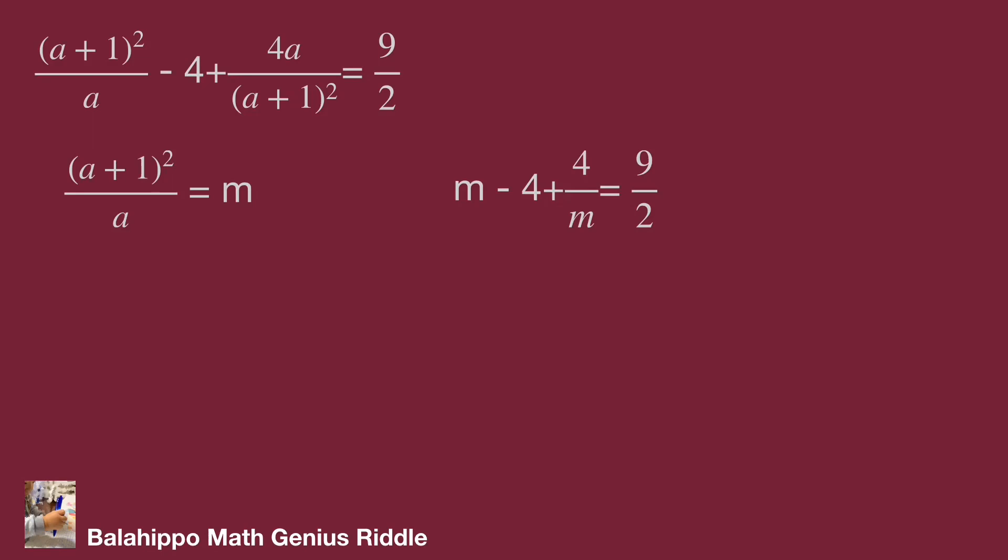Multiply m on both sides and simplify it. We get a new equation as 2m² - 17m + 8 equal to 0.